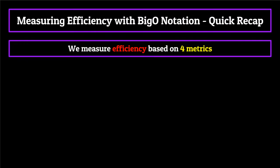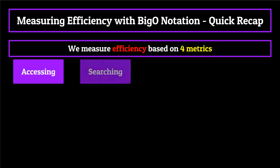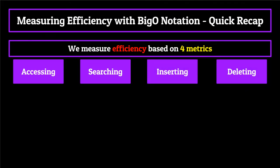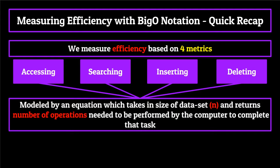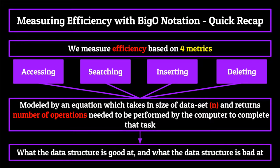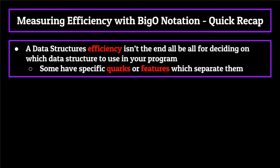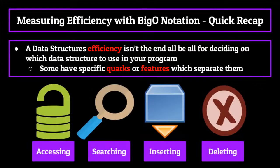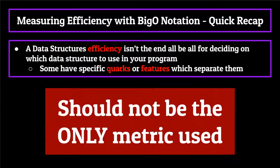To sum up: we measure the efficiency of a data structure based on how well it can perform four basic tasks — accessing, searching for, inserting, and deleting elements within itself. Each of these criteria is modeled by an equation which takes in the size of the data structure in number of elements n, and returns back the number of operations needed by the computer to complete that task. By measuring these four metrics, we can get a pretty good understanding of what the data structure is good at and what it is bad at. Now it's important to note that this isn't the end-all be-all — many data structures have specific quirks or features which separate them from the rest and provide additional functionality. Big O notation is incredibly useful, but it should not be the only thing that you use.